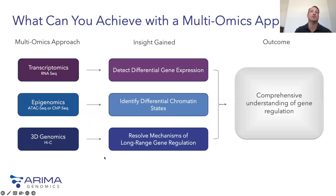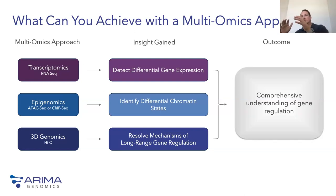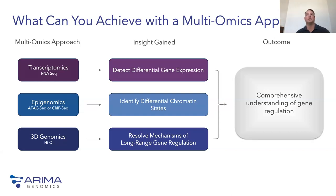A typical experimental design would be obtaining RNA sequencing data, looking at differential gene expression; ATAC-seq data, looking at chromatin state or open chromatin; and then 3D genomics data linking accessible regions—promoters to enhancers—and looking at the global topology of the genome and how that regulates gene expression.